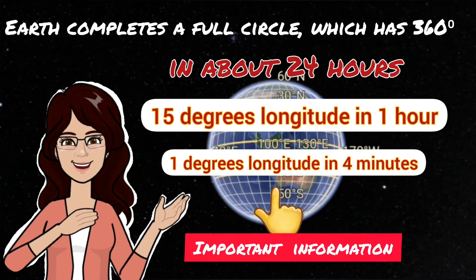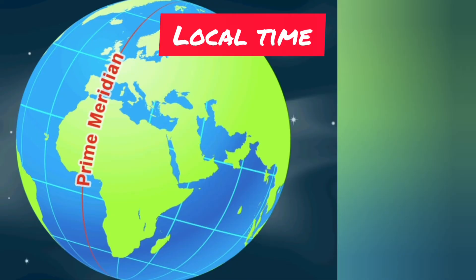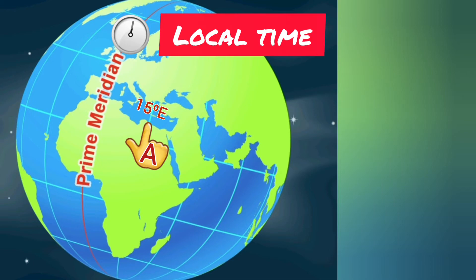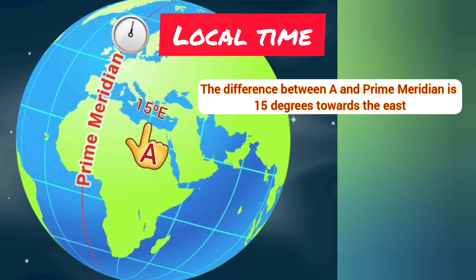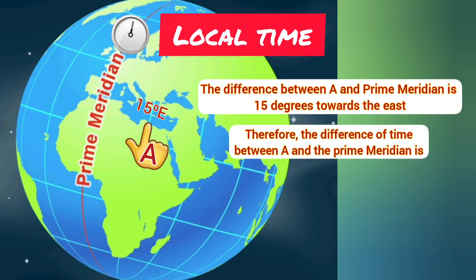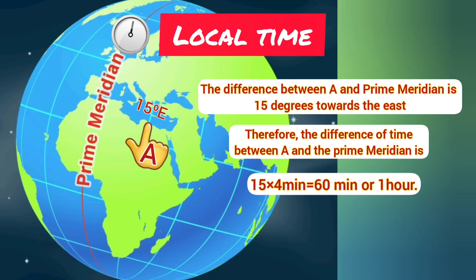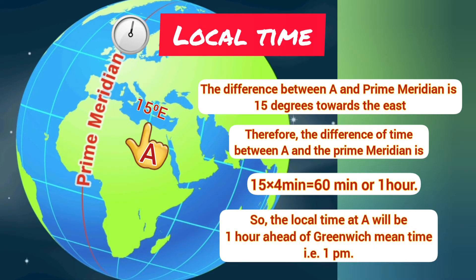Let us measure the local time of place A, which is located at 15 degrees east longitude, if it is 12 noon at Greenwich. The difference between A and the prime meridian is 15 degrees towards the east. Therefore, the difference of time is 15 × 4 = 60 minutes, or one hour. As A is located towards the east of the prime meridian, the local time at A will be one hour ahead of Greenwich Mean Time — that is, 1 PM.